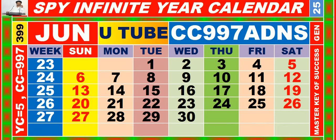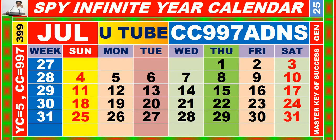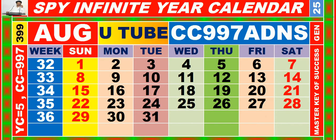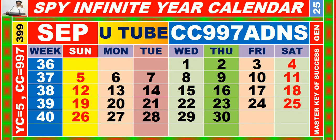Calendar for the month of August having calendar code equal to 997. Calendar for the month of September having calendar code equal to 997. Calendar for the month of October having calendar code equal to 997.